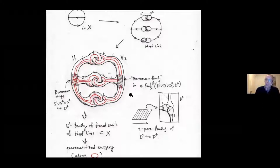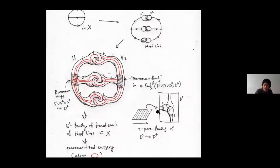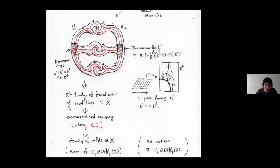Question: I think I understand — for the parts labeled as two-spheres, you're parameterizing by a single circle going around, and for the one-sphere, you just leave it as a constant family? Answer: Yes, the other components are constant; only one component depends on the parameter.